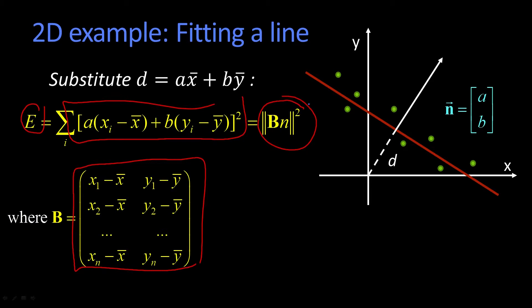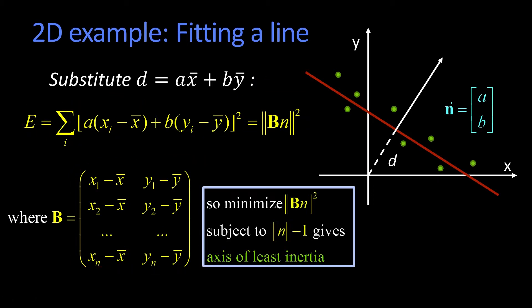So what we want to do is we want to minimize that quantity, the magnitude of B times N, where N is going to be the normal AB that we're going to solve for. And we said last time that what we want to do is we want to minimize BN squared. But remember, since the normal has to be a unit normal, we say subject to N equal 1.